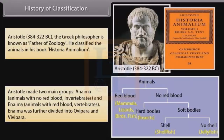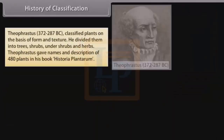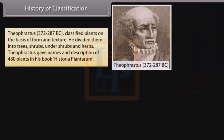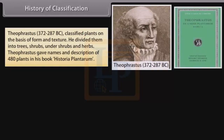Aristotle's group Anima was further divided into ovipara and vivipara. Theophrastus (372–287 BC) classified plants on the basis of form and texture. He divided them into trees, shrubs, undershrubs, and herbs. Theophrastus gave names and descriptions of 480 plants in his book Historia Plantarum.